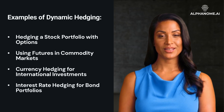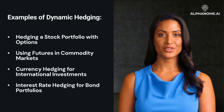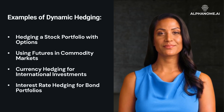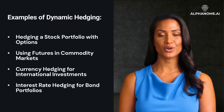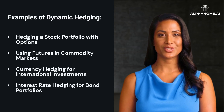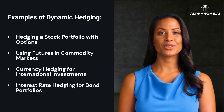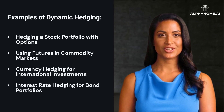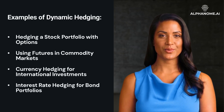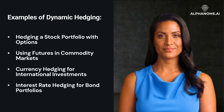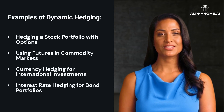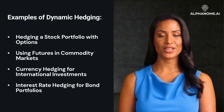Example 4: Interest rate hedging for bond portfolios. Situation: an investor holds a portfolio of long-term bonds. Strategy: the investor uses interest rate swaps or options to hedge against the risk of rising interest rates. Adjustment: the investor adjusts their hedging positions based on changes in interest rate forecasts.